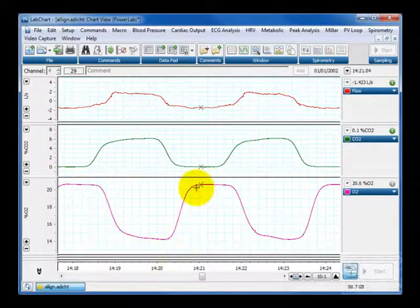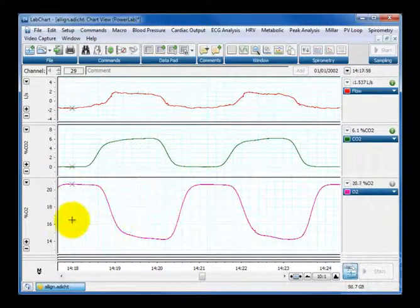So what we're going to do is shift the O2 channel to the left so it lines up nicely with the CO2 channel, so that any measurements you're taking you can align temporally rather than just having them as a reading on the screen.